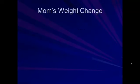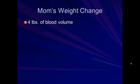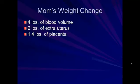Things aren't just going on with the developing fetus — there are things happening with the mom's body as well. One thing women are often concerned about is weight gain. This is an approximate breakdown of what a woman is going to gain due to the various parts of her body and the fetus's body changing during pregnancy. She'll gain about four pounds of extra blood volume, two pounds of extra uterus as the uterine walls thicken, 1.4 pounds of placenta — which connects the mom to the fetus and transmits nutrition in and waste out — and 1.8 pounds of amniotic fluid, which is the fluid the fetus floats in within the womb.